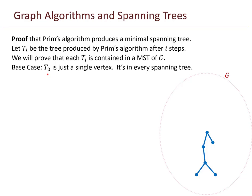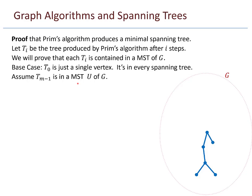This is a proof by induction. The base case: consider T_0, just the single vertex. It's in every spanning tree because every spanning tree must include all vertices, so T_0 is certainly contained in a minimal spanning tree. For the inductive step, assume T_{M-1} is contained in a minimal spanning tree U of G. So U is a minimal spanning tree for all of G and it includes the stage T_{M-1} — that's our induction hypothesis.